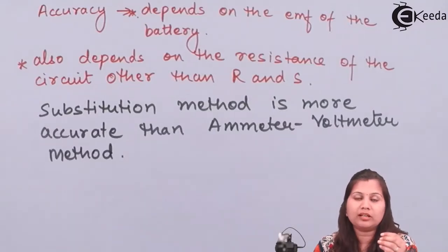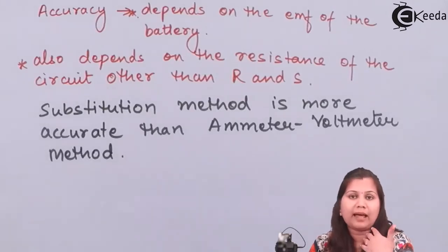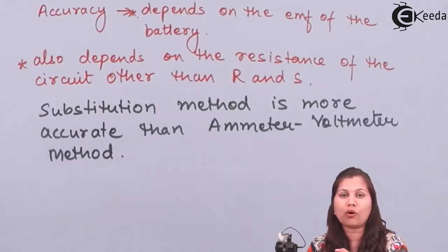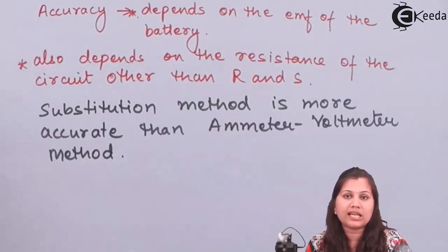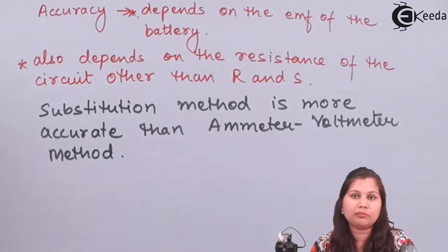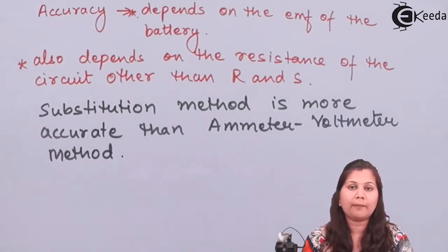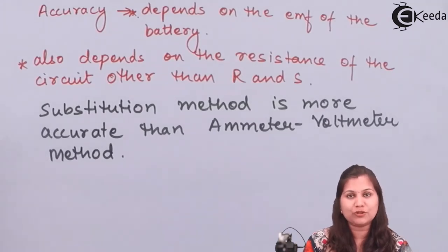The substitution method is not generally used for the measurement of medium resistances alone. This method can be used in some modified form for the measurement of high resistances. In bridges also, the substitution principle is used for the measurement of resistances or other parameters, and in high frequency AC measurements this substitution principle is also used. In this video we studied the substitution method for the measurement of medium resistances. I hope this topic is clear to you. Thank you.